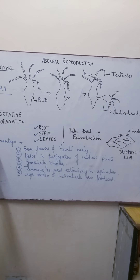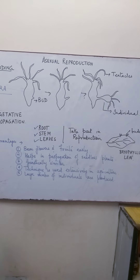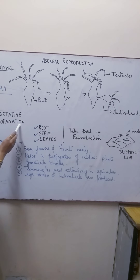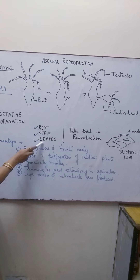Another type of asexual reproduction we will be talking about is vegetative propagation. Vegetative propagation is seen in plants only, and it is the method of reproduction in which only the roots, stem, and leaves take part. That means these parts develop new plants, which is why we call it vegetative propagation. So here the roots, the stem, and the leaves are taking part in the formation of a new plant.